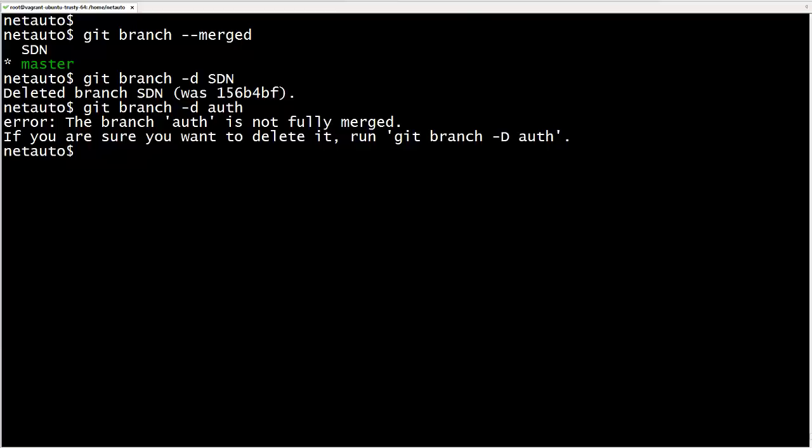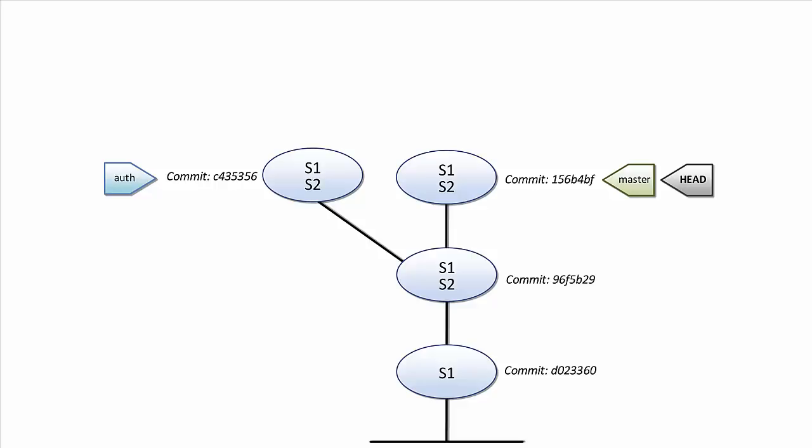However, Git lets us know we can still force-delete the auth branch using uppercase D instead of lowercase d. We want to be careful in this case because we would lose work on that branch — it would happen when Git performs garbage cleanup on the commits in the deleted branch. Now that we've merged and deleted SDN, let's do the same for auth. Looking at the commit graph, there is no direct path from master to auth, so Git cannot do a fast-forward merge. A three-way merge will happen.